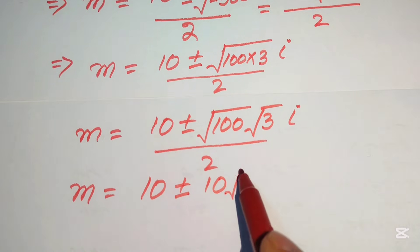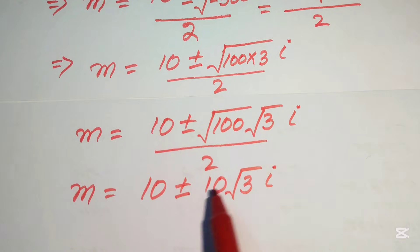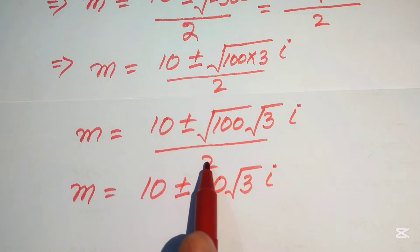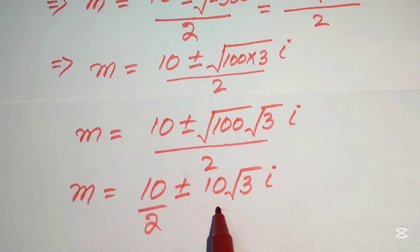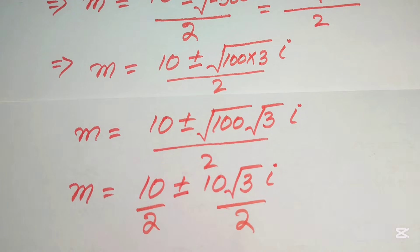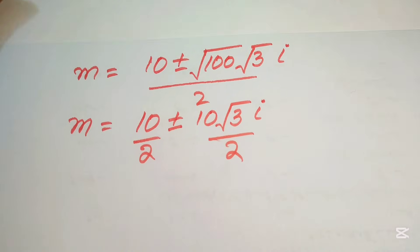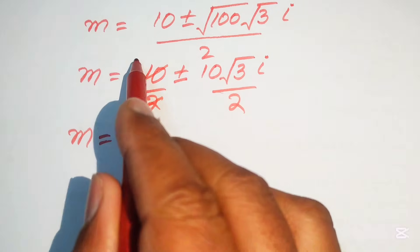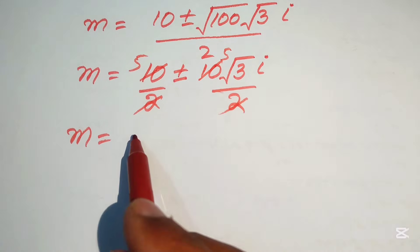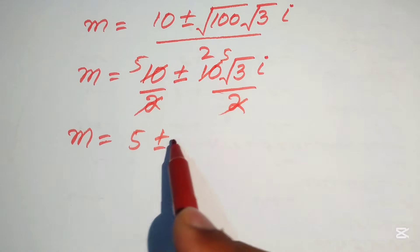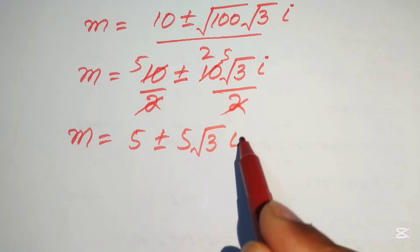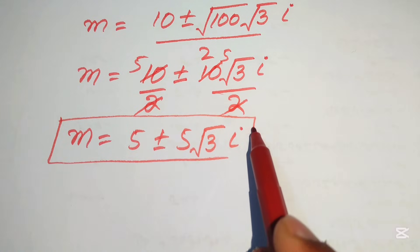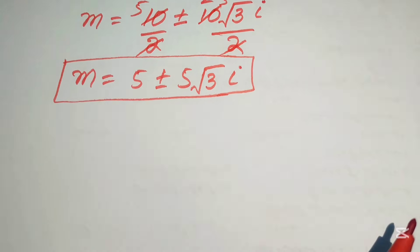Breaking the fraction, we write the 2 separately under both terms. Since 10 divided by 2 equals 5, we get m equals 5 plus or minus 5 times square root of 3 times iota. These are the two complex values of m.